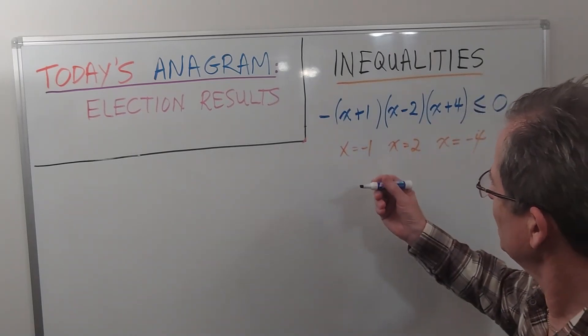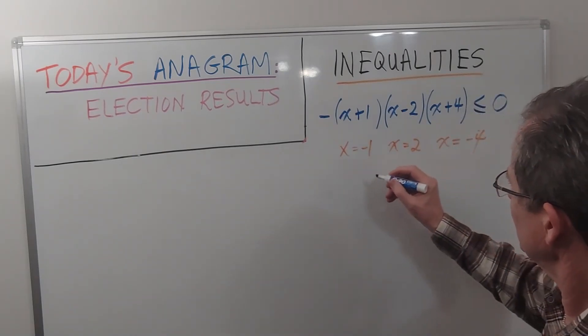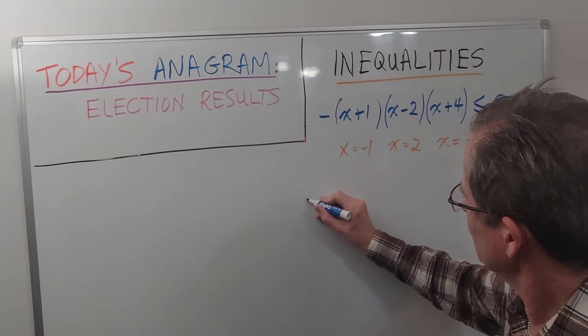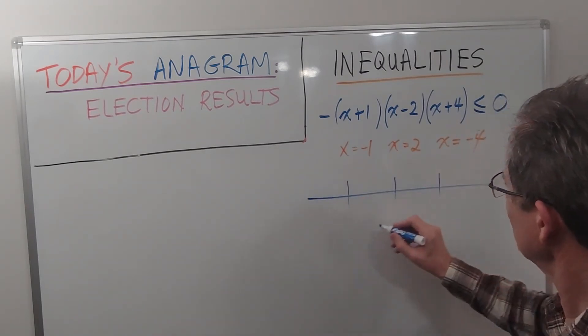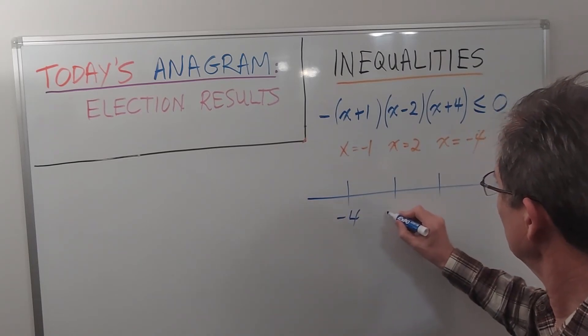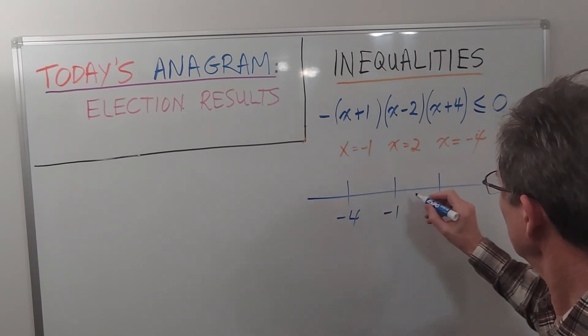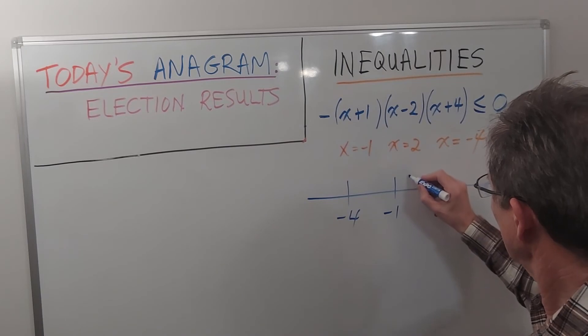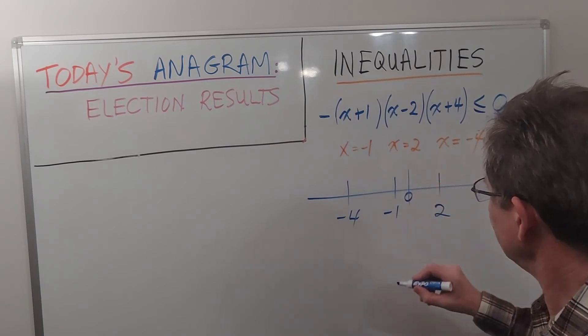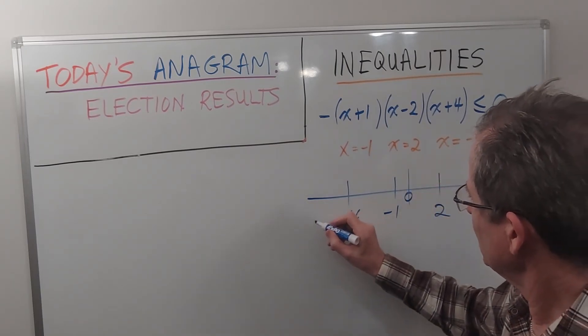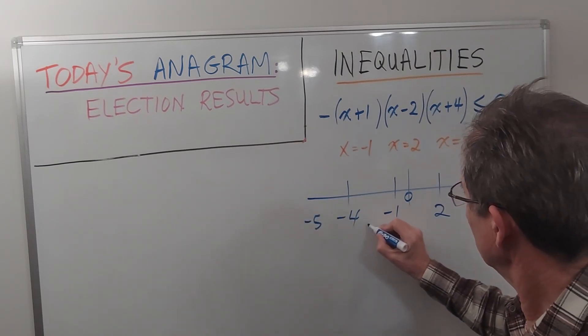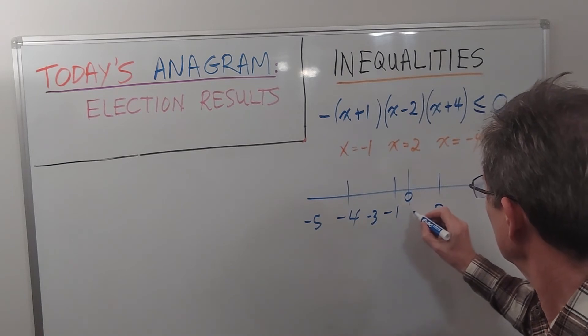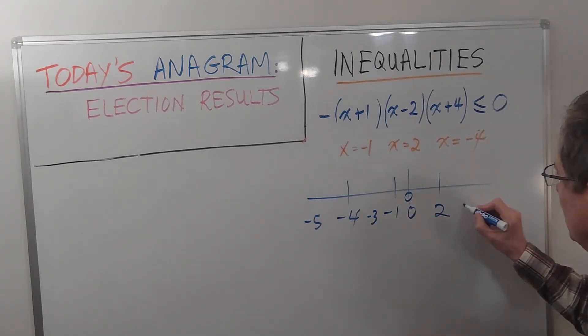So we want to pick a number on either side and in between those key numbers: negative 4, negative 1, and 2. 0, of course, is here but it doesn't really matter. So we want to pick a number like negative 5, negative 3, 0 would be good, and 3.